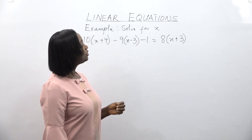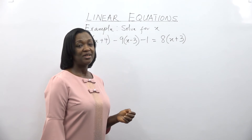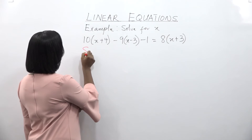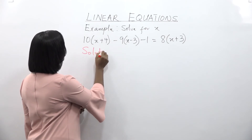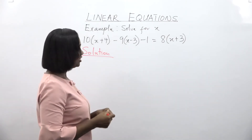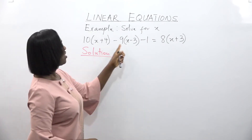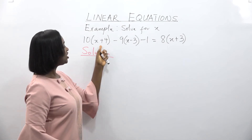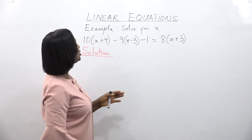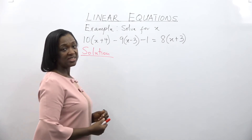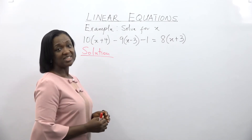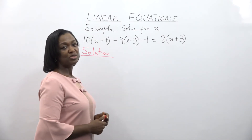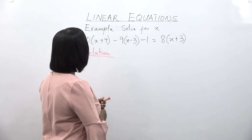Let's solve this example on the board. It looks a little complicated, but it's actually very easy. We're solving for x and we have three brackets — the unknown x is in each of the brackets. The first step will be to expand the brackets. The second step will be to collect the like terms — the terms in x and the constant terms — and then finally solve for x.